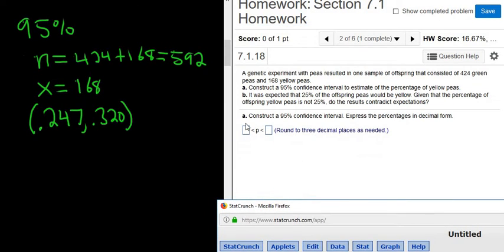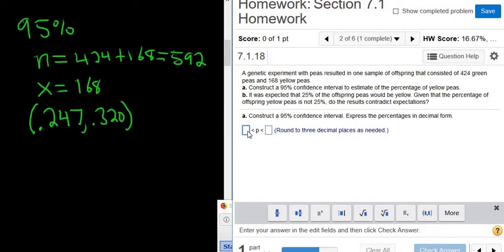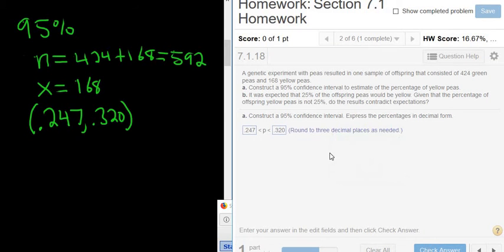So we type them in: 0.247, 0.320. Good stuff.